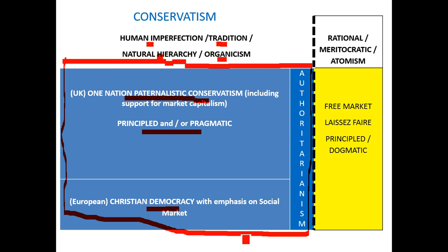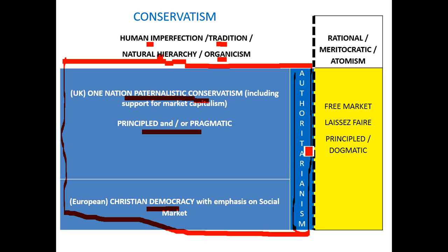Within this blue block that buys into human imperfection, tradition, and so forth, there has always been an authoritarian strand — a small sub-strand. Conservatives were never quite reconciled to democracy and post-Disraelian social reform, but for much of the century from 1840 up to the 1960s or 70s, they were very much a minor strand within the human imperfection, tradition, natural hierarchy, organic block of conservatism.